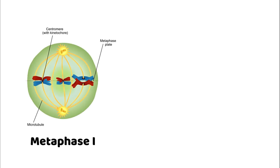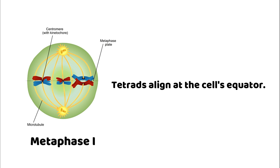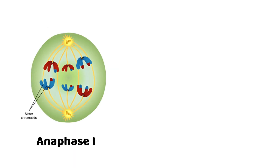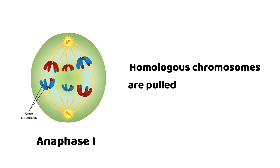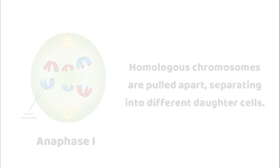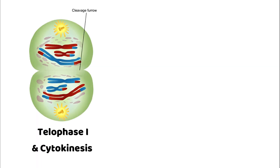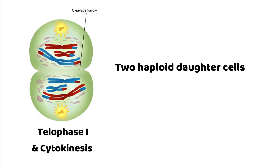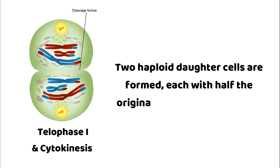Metaphase 1: tetrads align at the cell's equator. Anaphase 1: homologous chromosomes are pulled apart, separating into two different daughter cells. Telophase 1: two haploid daughter cells are formed, each with half the original chromosome number.